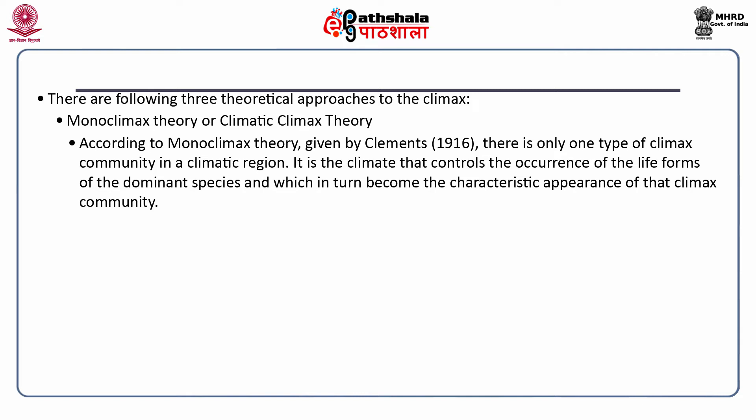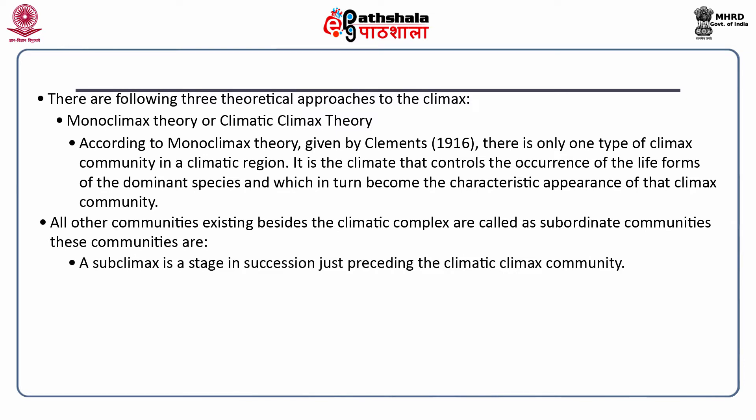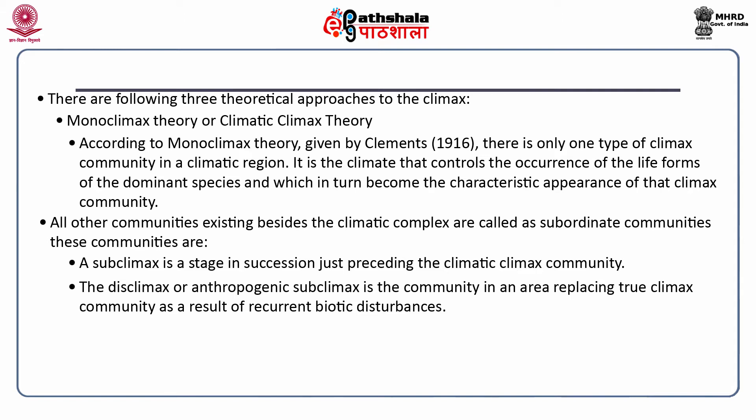According to the Monoclimax theory given by Clements in 1960, there is only one type of climax community in a climatic region. It is the climate that controls the occurrence of the life forms of the dominant species, which in turn become the characteristic appearance of that climax community. All other communities existing besides the climatic climax are called subordinate communities. A subclimax is a stage in succession just preceding the climatic climax community. The disclimax or anthropogenic subclimax is the community in an area replacing the true climax community as a result of recurrent biotic disturbances.